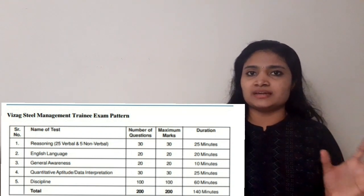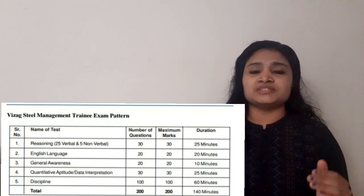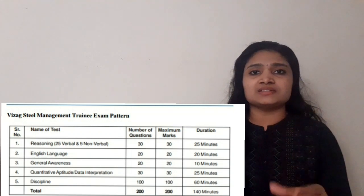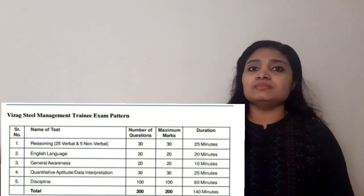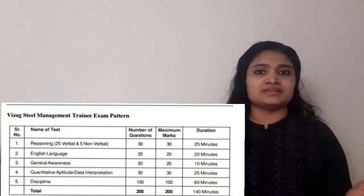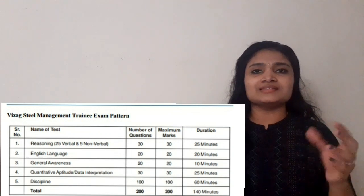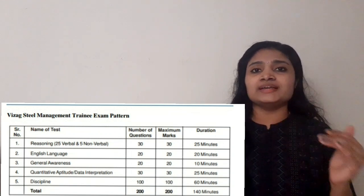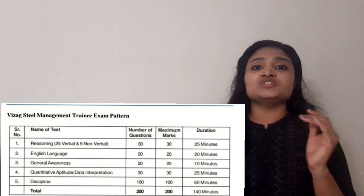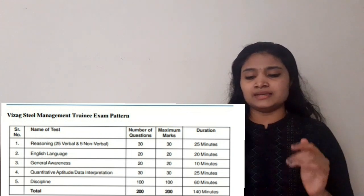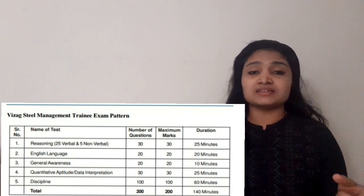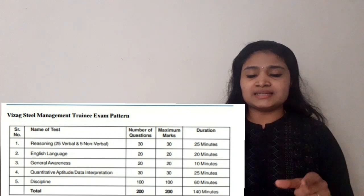Next is the English subject. The total number of questions is 20, with 20 marks allotted and a time duration of 20 minutes. Third is General Awareness, which also has 20 questions and 20 marks, but the time duration is only 10 minutes.